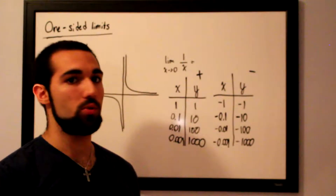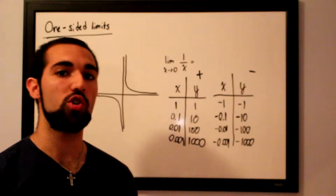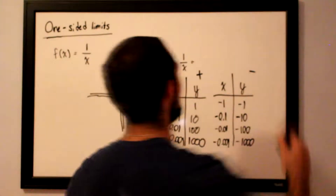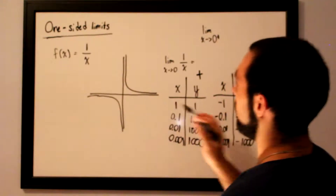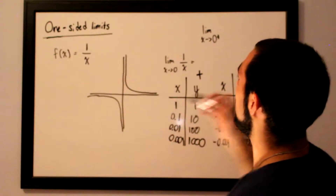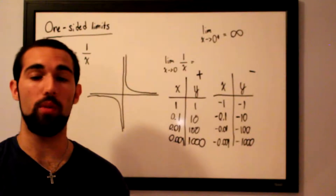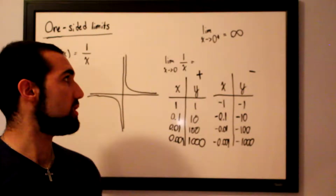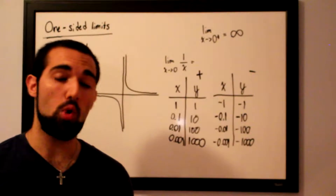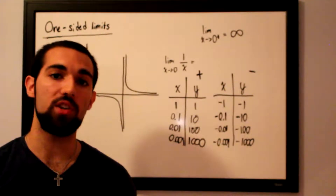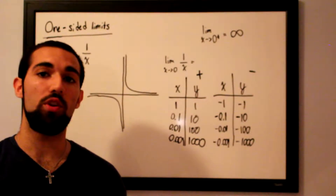If you tried putting in 0.0000001 you would get a very large number, and you could always plug in something smaller and get an even larger output. So in this case, the limit as x approaches 0 from the right for 1 over x is equal to positive infinity. And if something shoots downward into the negative infinity direction, then your limit is going to be negative infinity.